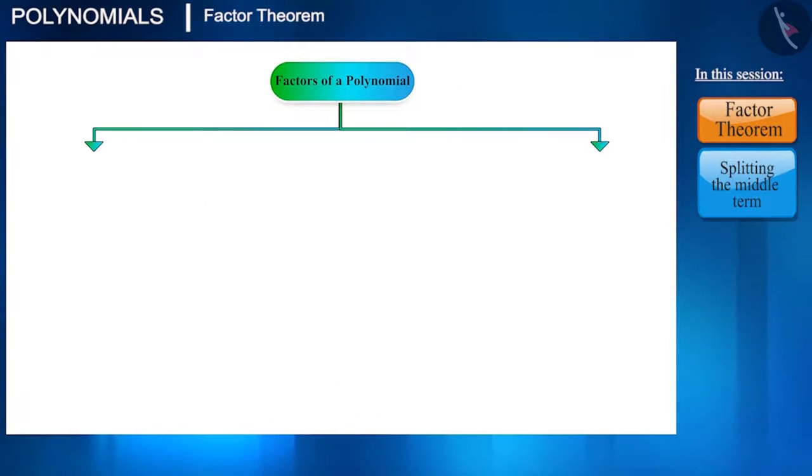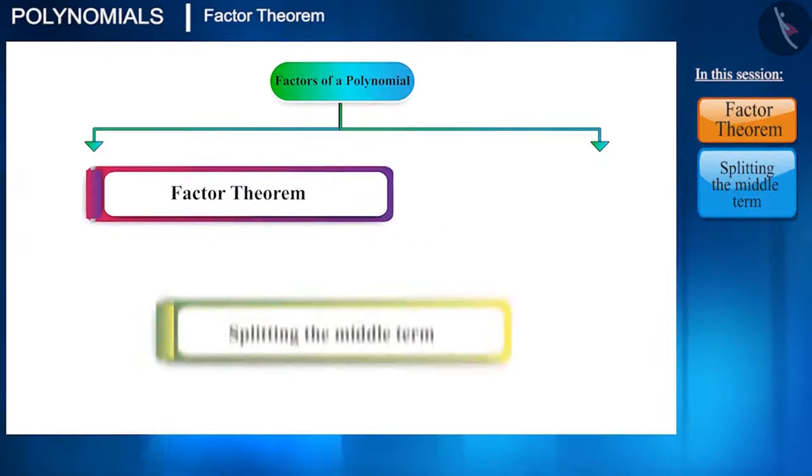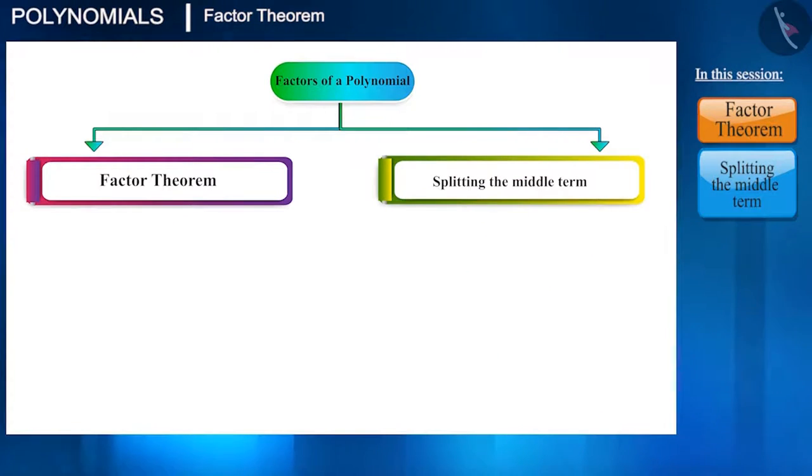For this, we have two methods. One is Factor Theorem, and the second is Splitting the Middle Term. Suppose we are given a quadratic polynomial 2x² + 7x + 3. From this, we will derive the factors using the Factorization method and Splitting the Middle Term method.